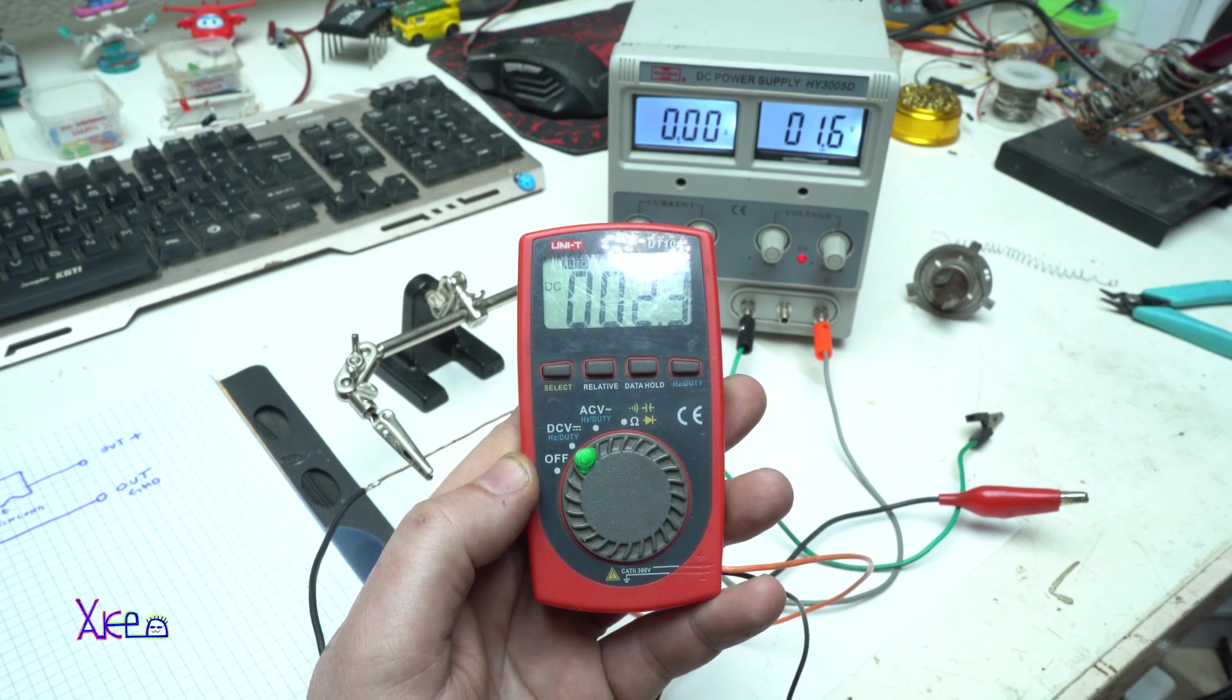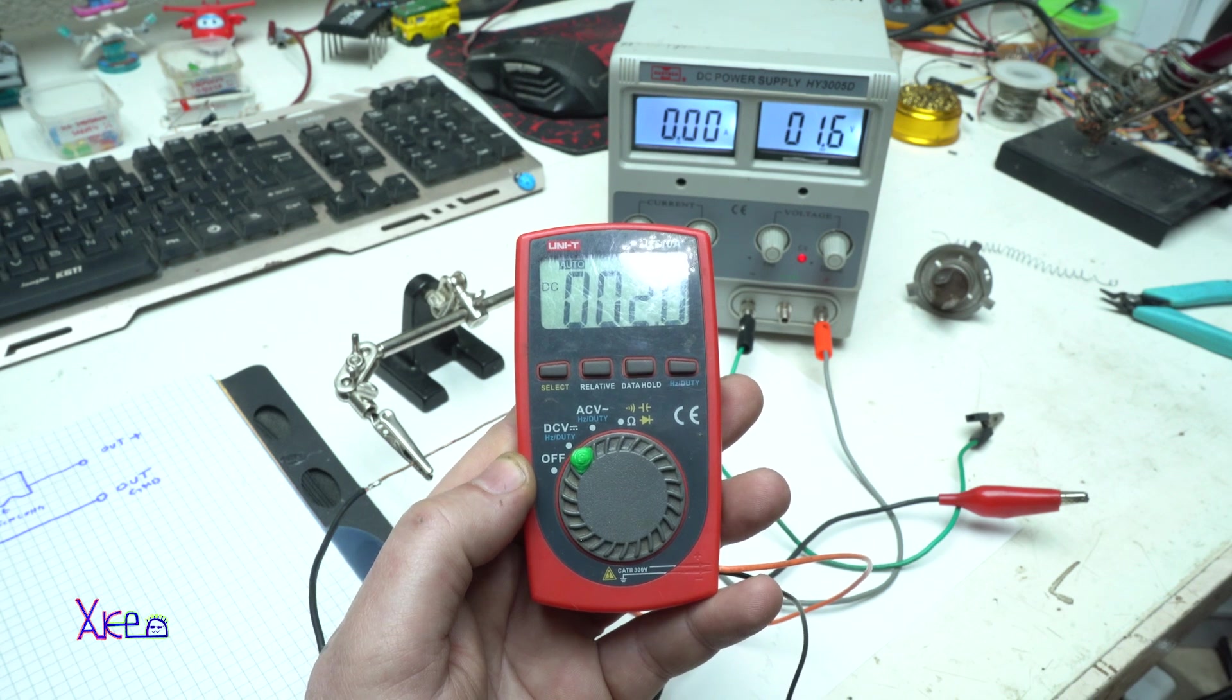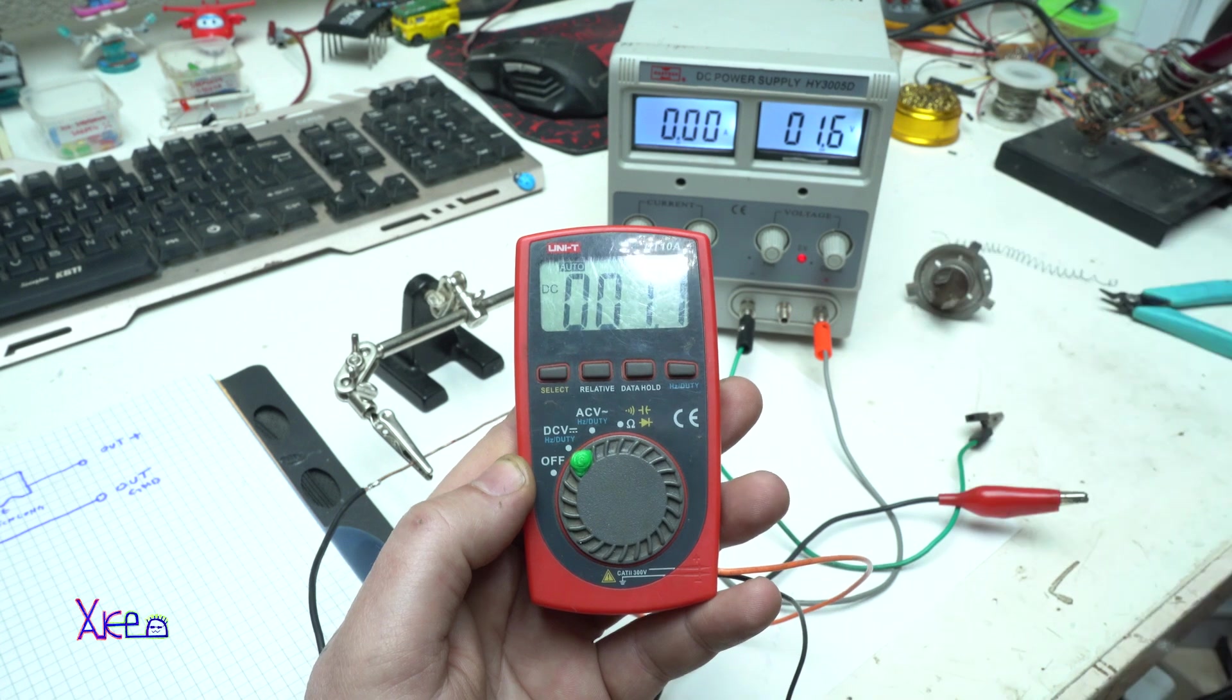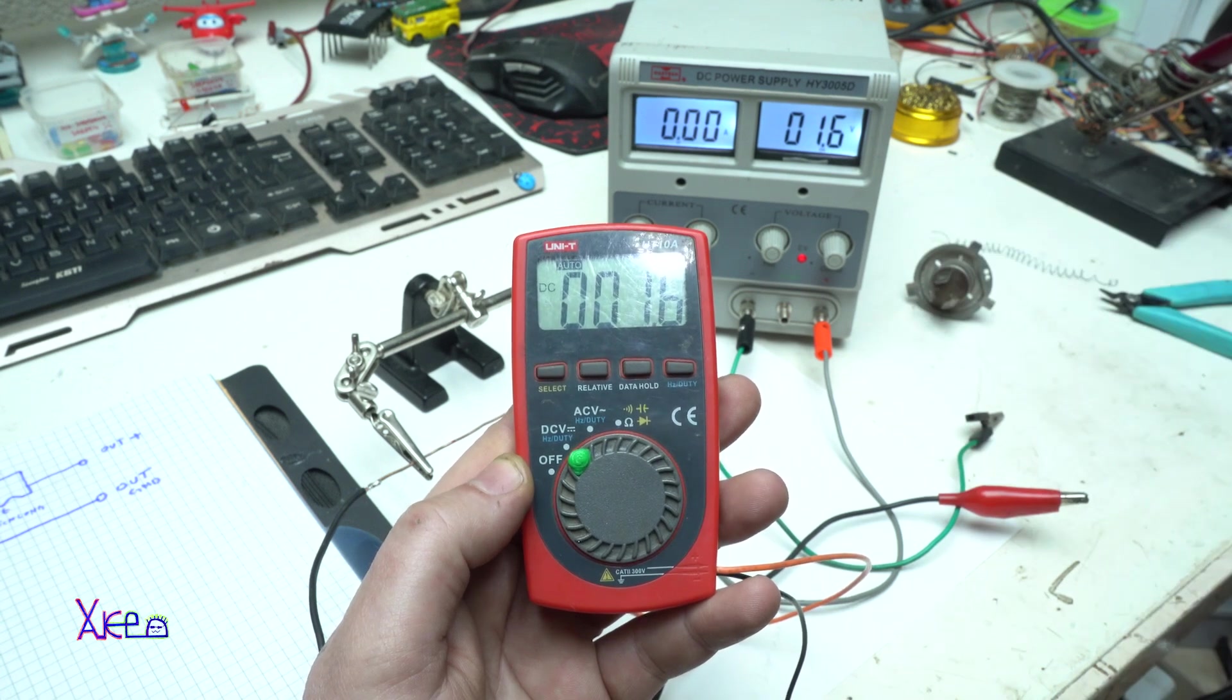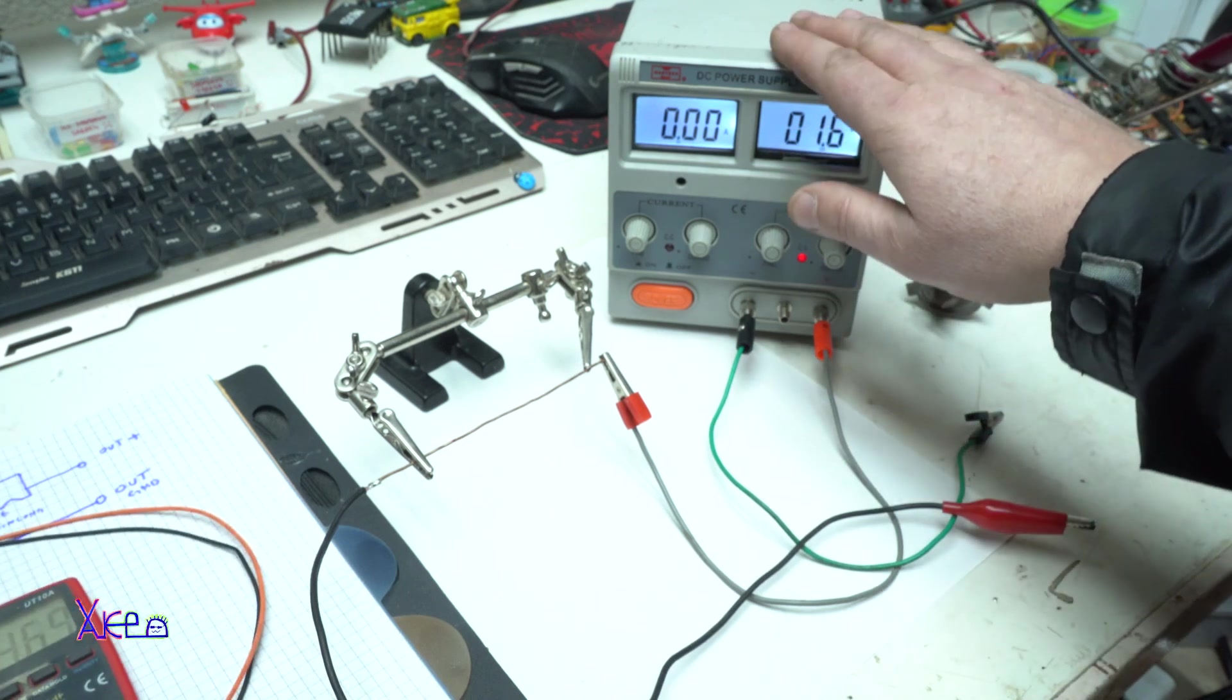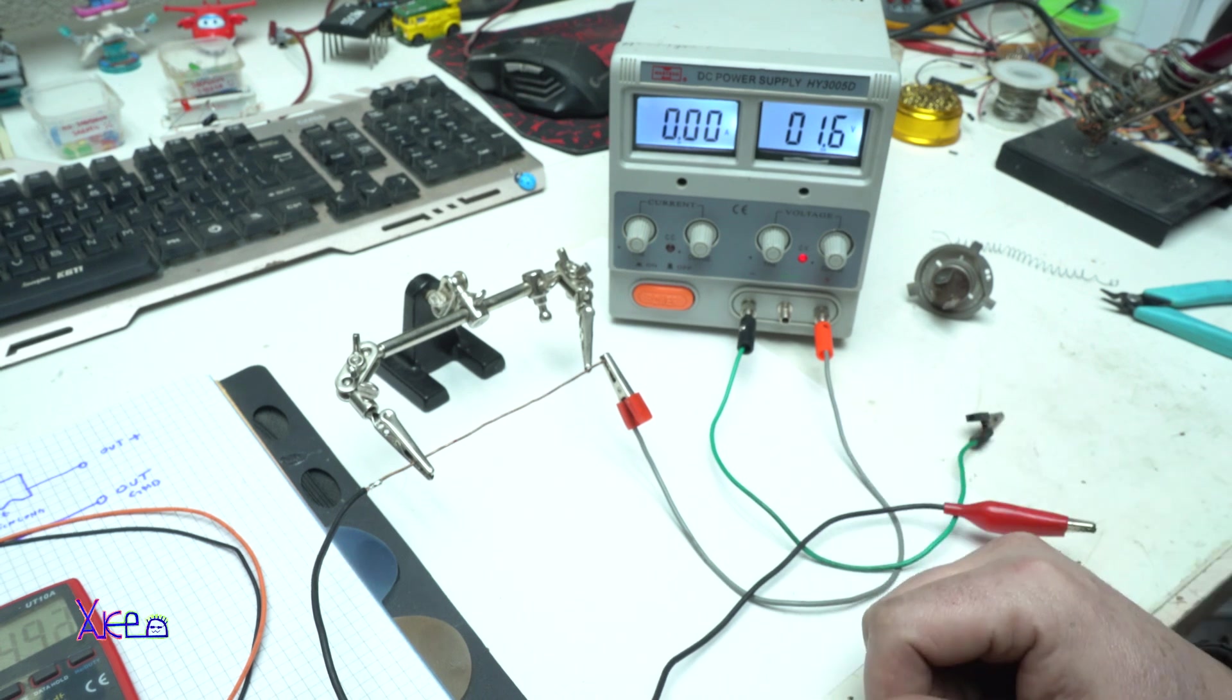So in this video I'm going to show you how you can measure high power current using a digital multimeter that doesn't have that function to measure current. I'm going to use this big boy digital power supply that can deliver 30 volts and 5 amperes. Let's start today's experiment.